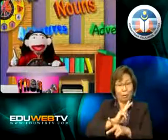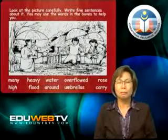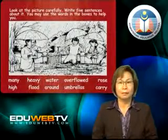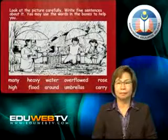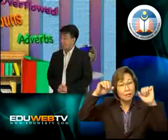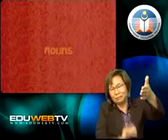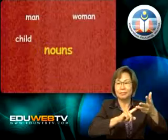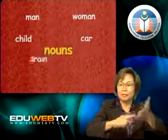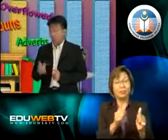All right, I'll be careful when I am making sentences. Okay, now let's look at the picture again. Can you list down some nouns related to the picture? Nouns are naming words, so I can list down: man, woman, child, car, trains, umbrella, and rain. Good. I can see that you understand what nouns are, Siti.